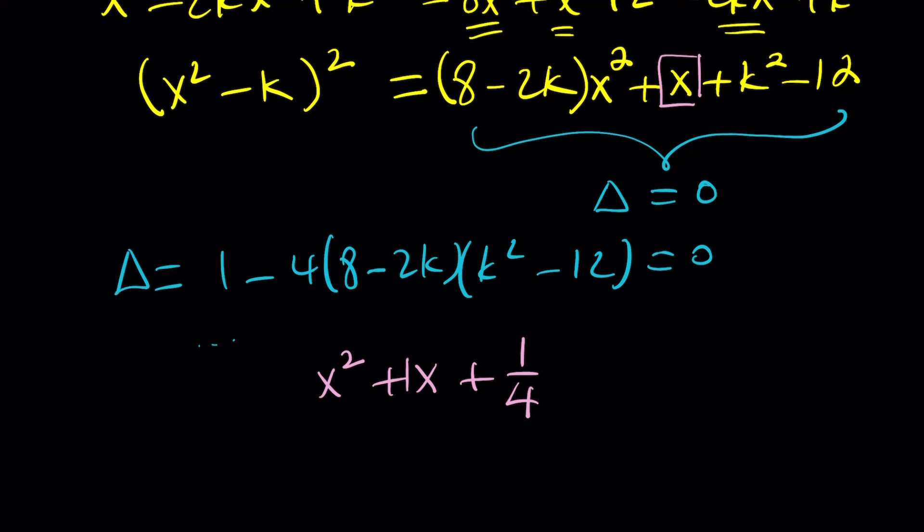And that comes from the coefficient of x, half of that, squared. In other words, this is x plus 1 half squared.